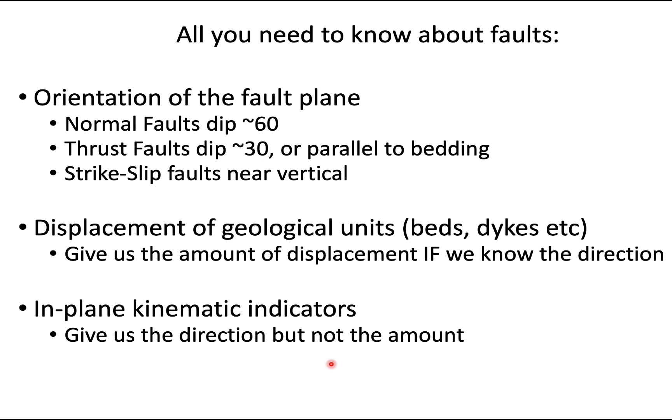So by combining all three of these things, you can constrain what happens with the fault. Now, the only other thing to say is that once you have a fault, you have a weakness in the rock and often they get reactivated and they can be in the same direction, but they can also end up changing direction as well. But in general, if you have these three parts, you can work out what the motion is on the fault plane.